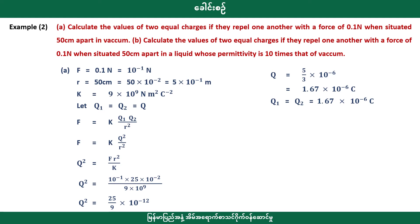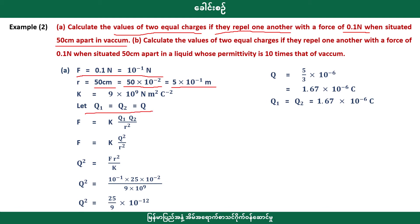To calculate the values of two equal charges: two equal charges are equal and they repel one another. We take the square root, which gives equal values for the charges.